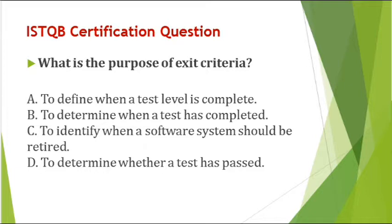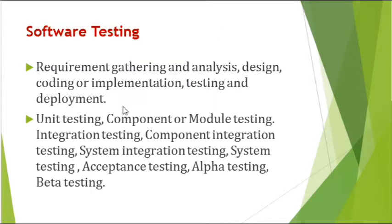We will see at the end of the session which is the appropriate answer. As we all know, in the software development lifecycle there are different phases — right from requirement gathering, analysis, and design, till testing and deployment. Each phase goes through different levels of testing, like unit testing, component testing, system testing, acceptance, alpha, and beta. All these testing levels have to go through exit criteria, so exit criteria is determined to check whether the test activity has been completed for all these levels. It has to be decided in the planning stage itself.